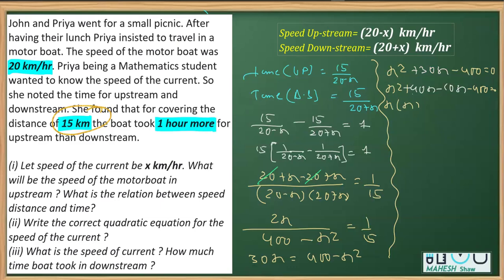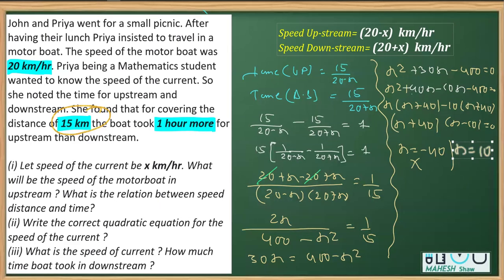So this is x square plus 40x minus 10x minus 400 equals 0. So when I take x common from here, I'll get x plus 40 and when I take minus 10 common from here, it is again x plus 40. So we are getting x plus 40 and this has x minus 10 equals 0. Now, equating this with 0, we are getting x is equal to minus 40 and the speed cannot be negative. So you can discard it. And in this case, we are getting x is equal to 10. So we got the speed of the current which is coming as 10.